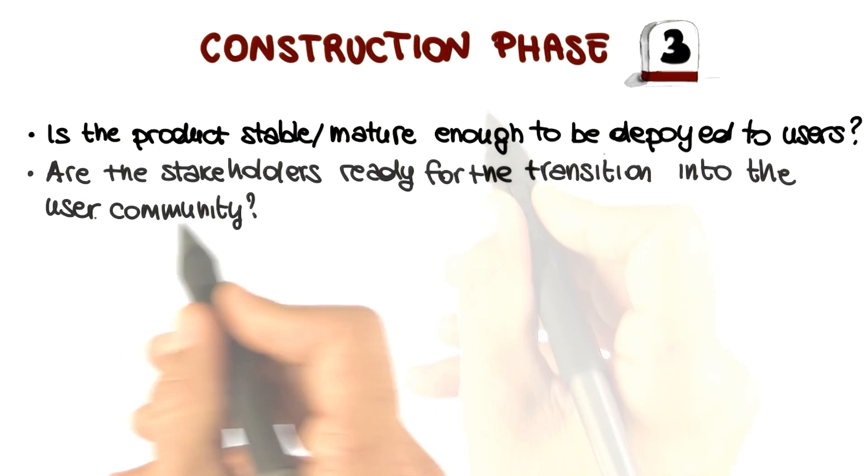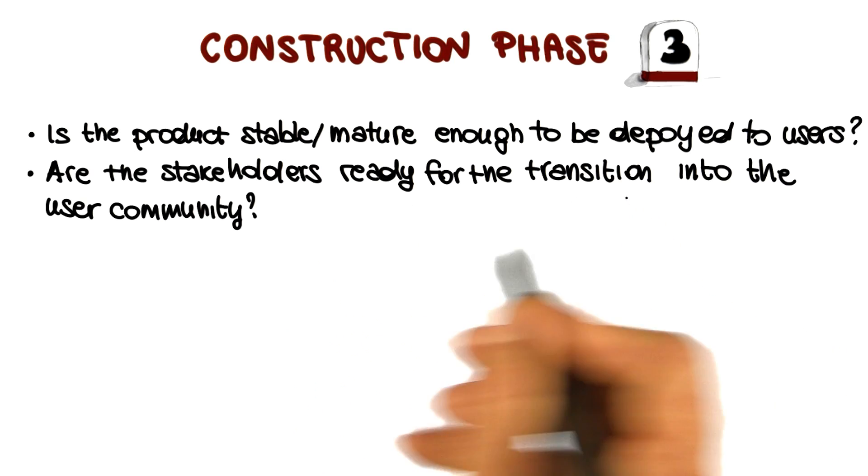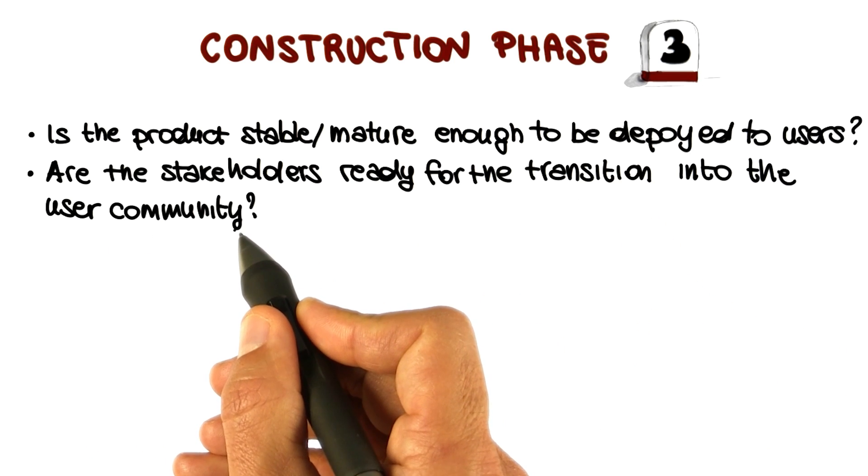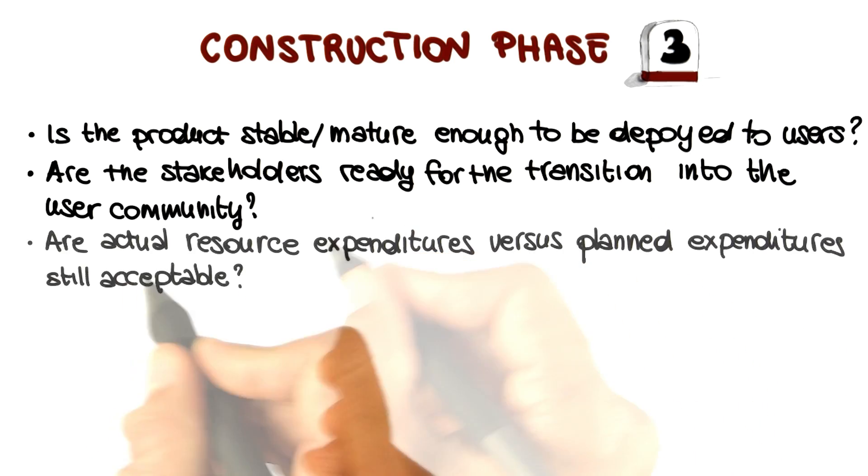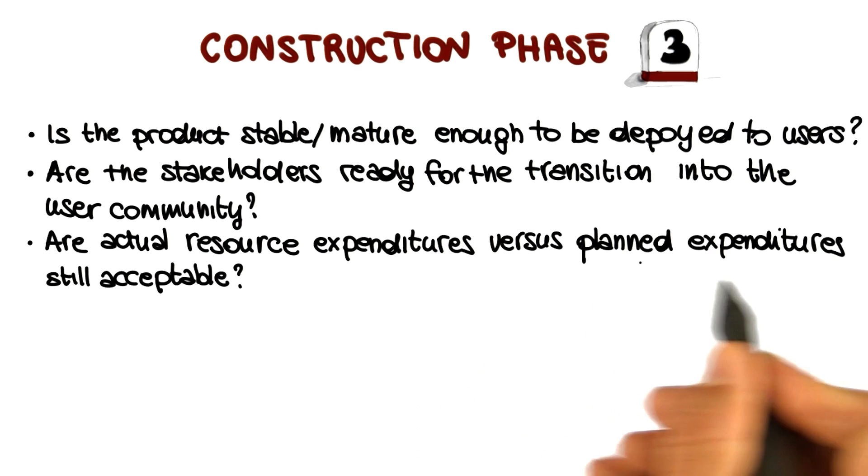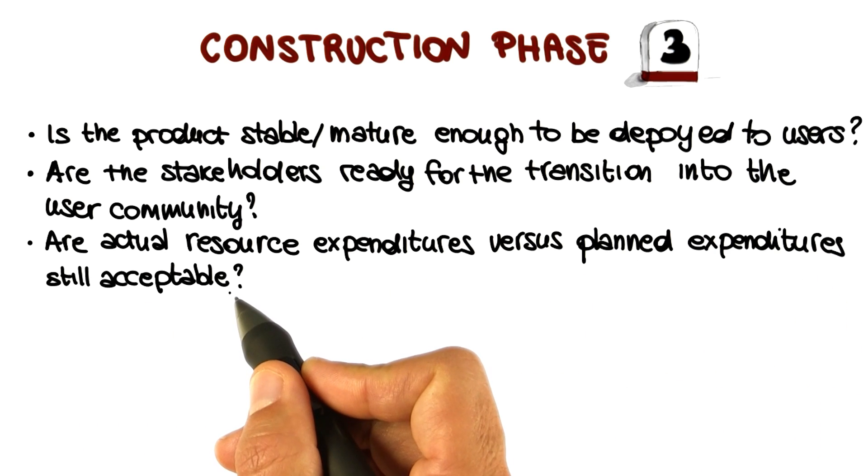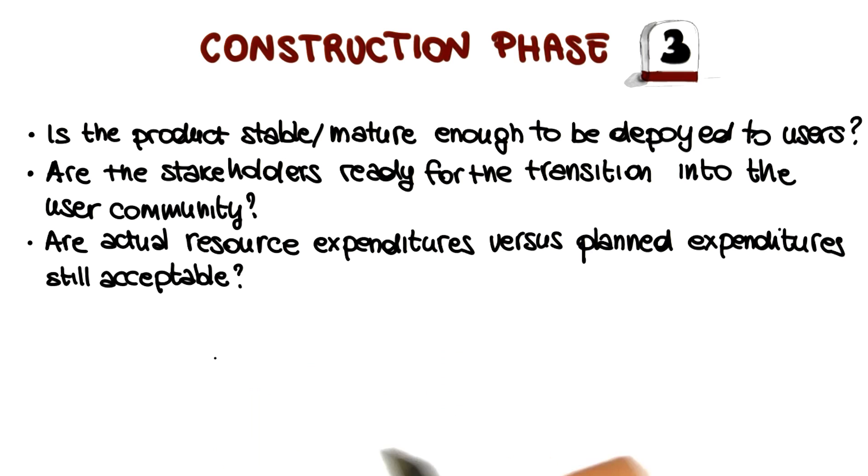Are the stakeholders ready for the transition into the user community? Are we ready to go from development to production? Are the actual resource expenditures versus the planned expenditures still acceptable? What this means is that at this point we can really assess whether our estimates were accurate enough with respect to what we actually spent for the project up to this point.